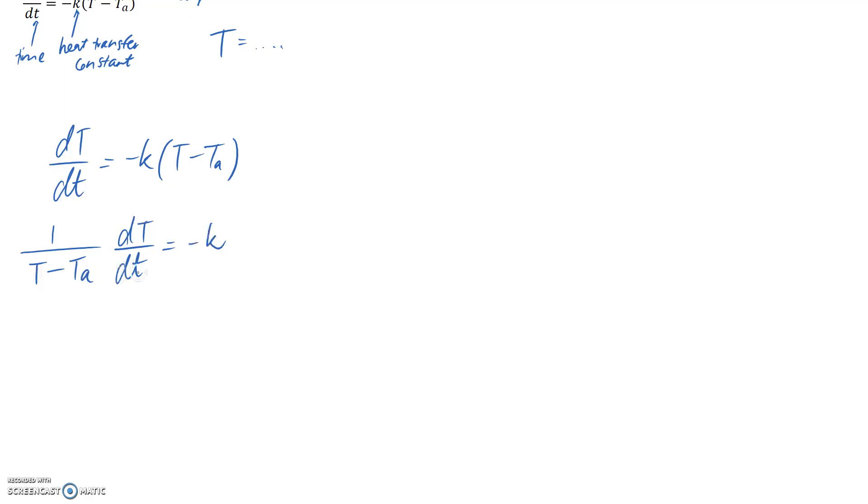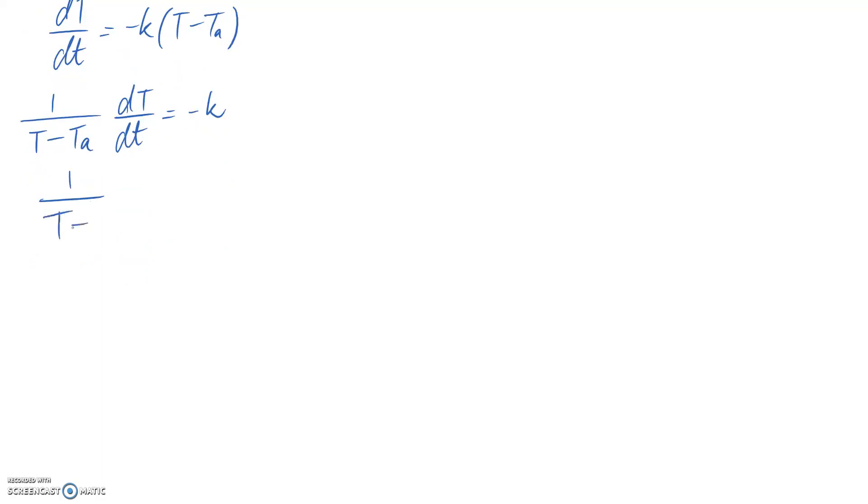I need to separate the little t from the big T's, so I'm going to pop this to the other side of the equation. So we get 1/(T - TA) dT is equal to k dt. We've separated across the equal sign now, which means we should be able to integrate both sides.